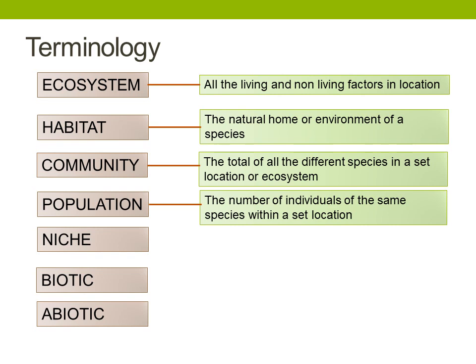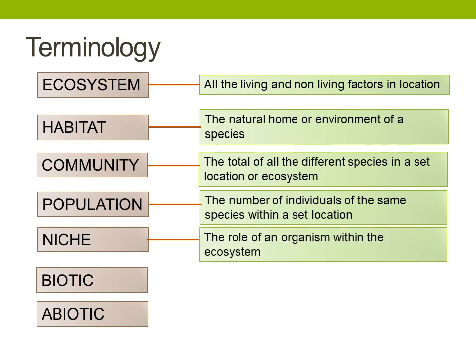The next term, niche, is one that's quite difficult to understand, but it means the role of an organism within the ecosystem. What we mean by the role of the organism is what they eat, where they live, how they exist, and how they interact with the other organisms. The idea is that no two organisms — two different species — can occupy the same niche. They might be incredibly similar but there will have to be some differences, otherwise they will be in direct competition and it's most likely that one will out-compete the other and become the dominant species in that ecosystem.